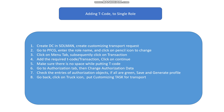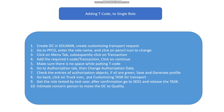After that, go back and click on the truck icon — the truck symbol — and put the customizing task for transport. Get the role tested by a test user. After confirmation, go to AC01 and release the task, then inform the concerned person to move the defect correction to quality.